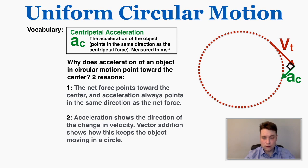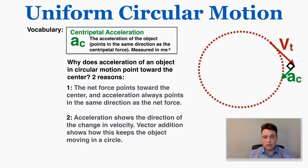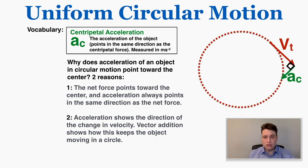Another common misconception about centripetal acceleration is that it means the object is getting faster and faster around the circle, but that's not true. The role of centripetal acceleration is to change the direction of the velocity — it doesn't change the magnitude, just the direction. So the speed stays constant; the acceleration is just changing its direction as it turns around the circle.